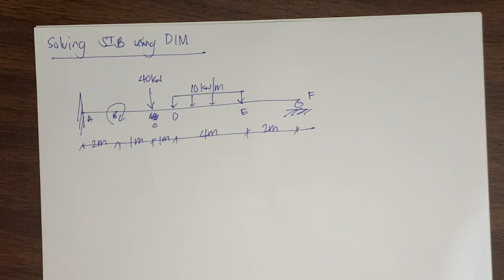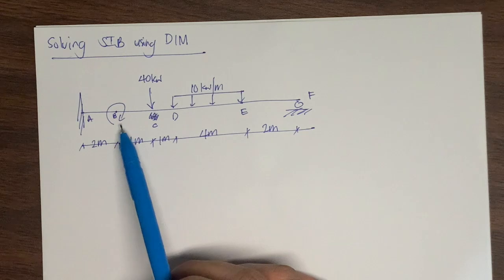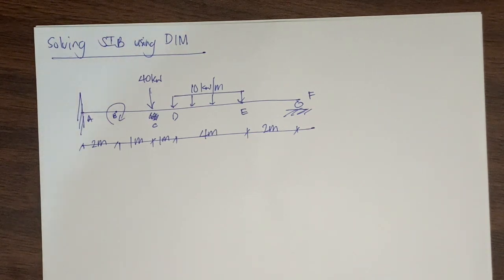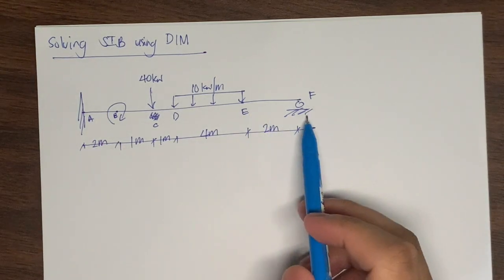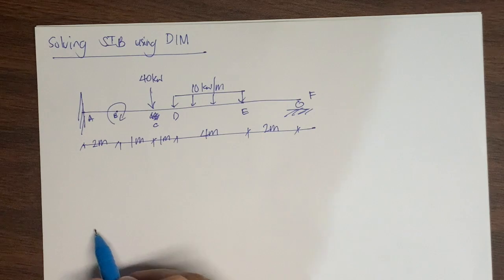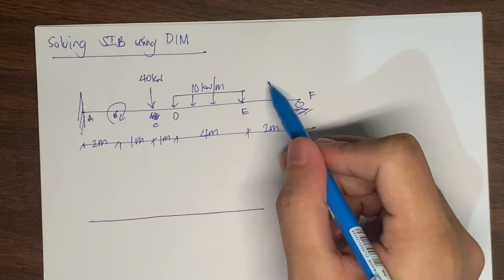The first requirement is to draw the elastic curve, but since this is somewhat complicated — we have an applied couple or concentrated moment at point B — what we will do first is cut the member at the last segment, which is segment EF. Let's draw the free body diagram with the cut there.